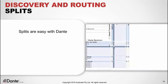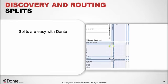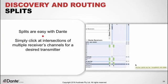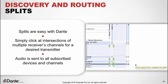Splits are easy with Dante but were often vexing on earlier systems that required complex setup and had ground loop problems. All we do is click the intersections of the desired transmitter channels and any multiple receiver channels — no special hardware or settings are required. The transmitter audio is simply sent to all receiver subscriptions. When splitting audio to more than three receiving devices, Dante Controller will present a fan-out message indicating that multicast use is recommended for optimal network efficiency.